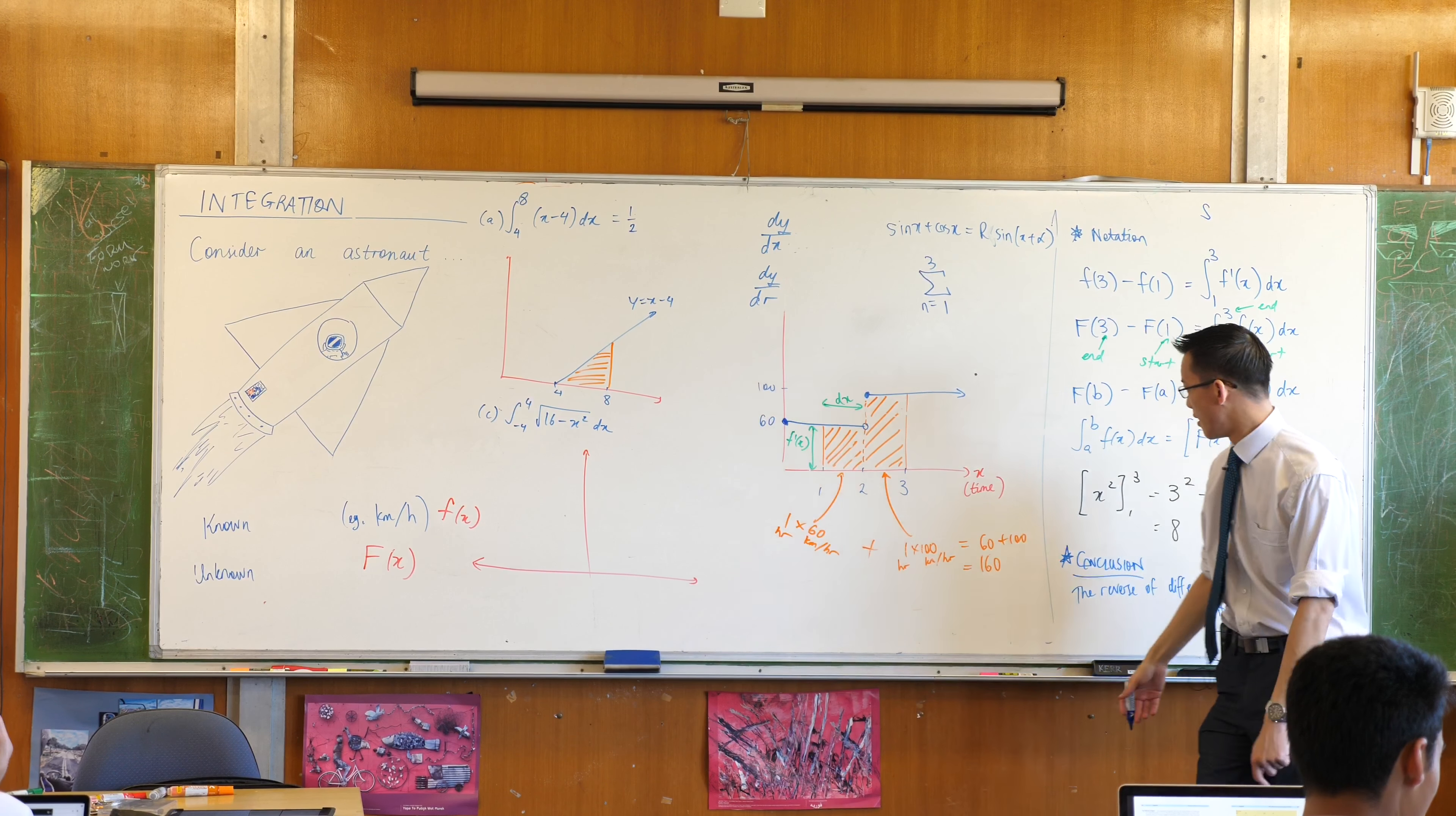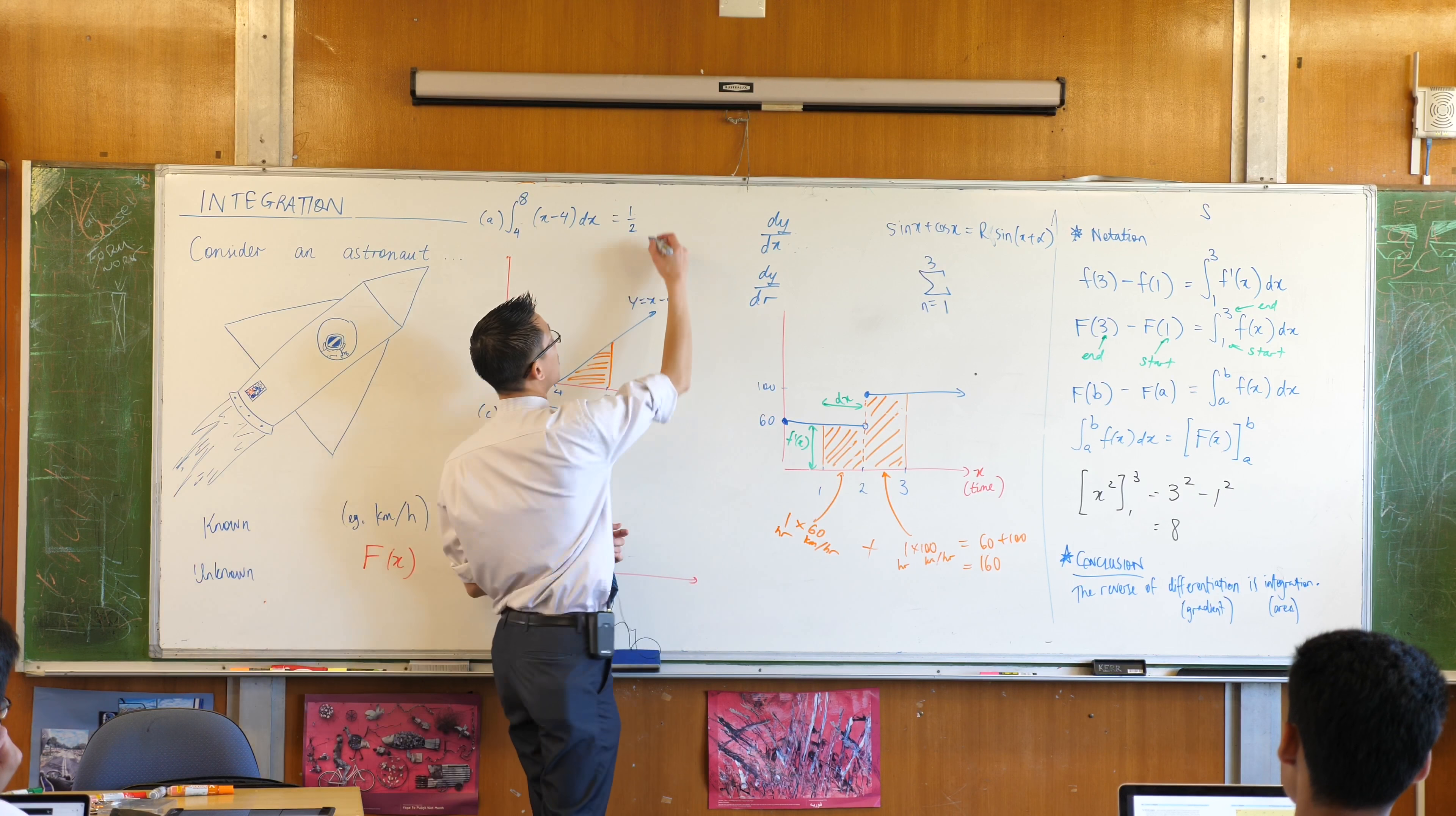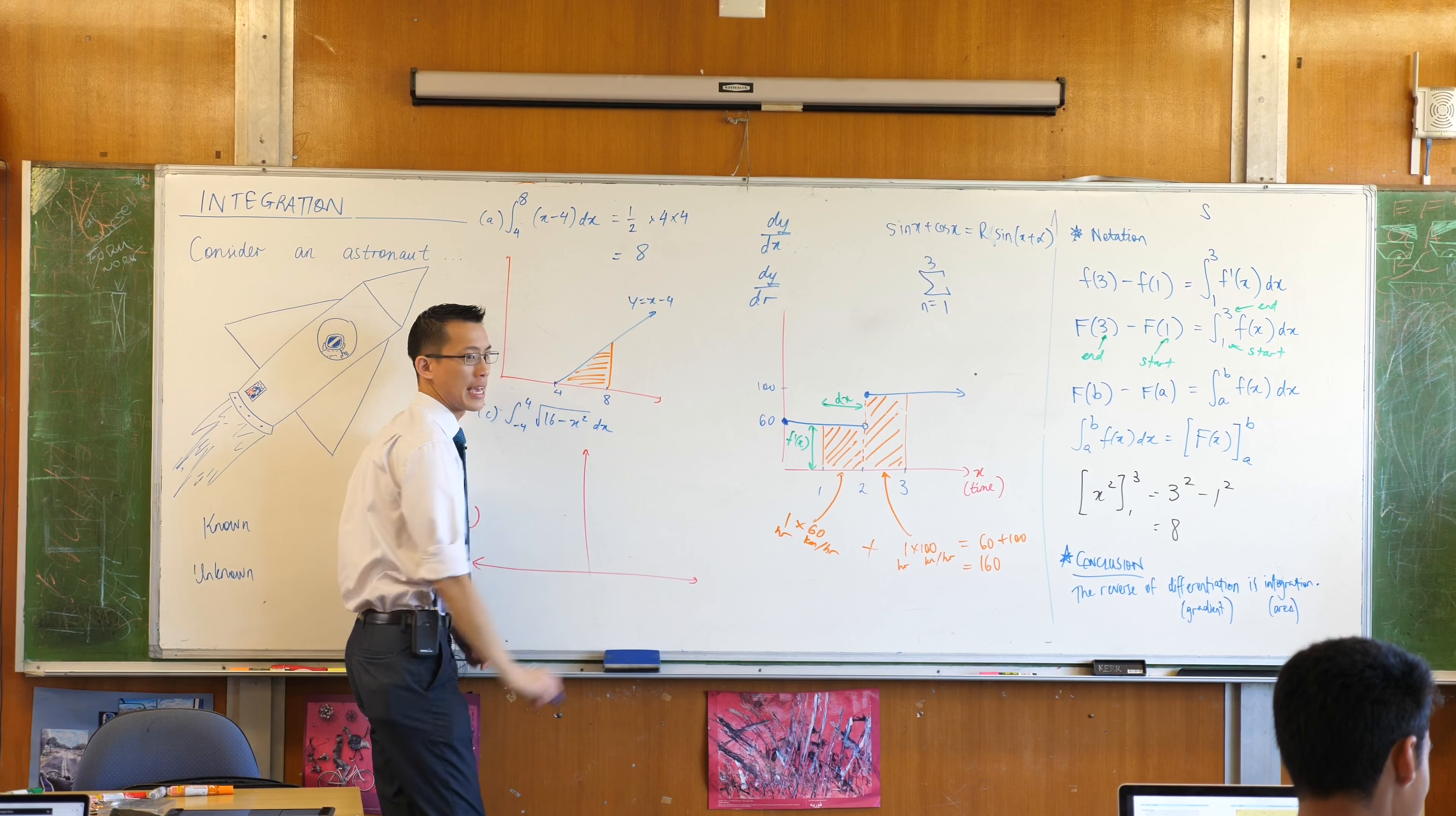I'm thinking about that formula rather than this height times width formula because it's a different shape. What's the width of this, or the base rather, of this triangle? It's just going to be 4, 8 take away 4. What's the height? 4. Also 4, because the gradient of this is just 1, so every time you go across 1 unit, you go up 1 unit. So, 4, a half times 4 times 4, a half times 16 is 8.